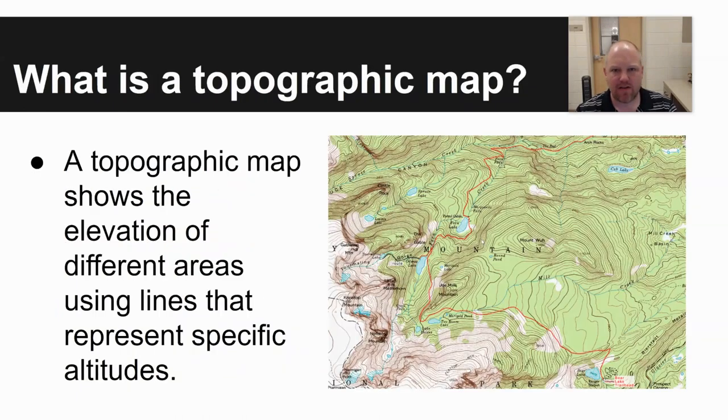So first off, what is a topographic or topo map? It is a map that shows the elevation of different areas using lines that represent specific altitudes. Looking at the picture to the right, you can see a mountainous area and those different lines represent changes of elevation, whether you go up some peak or down into some valley.